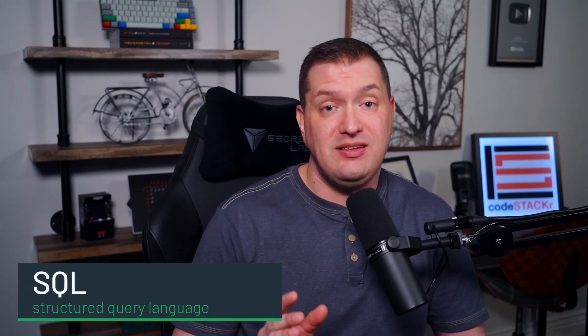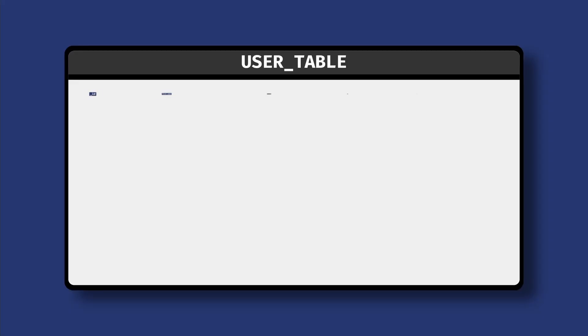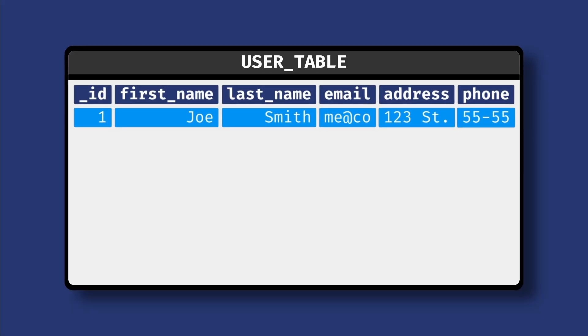So let's talk about the OG database. SQL stands for Structured Query Language. It's a relational database. The easiest way to understand how SQL data is structured is by comparing it to an Excel spreadsheet. In relational databases like SQL, data is stored in rows and columns.